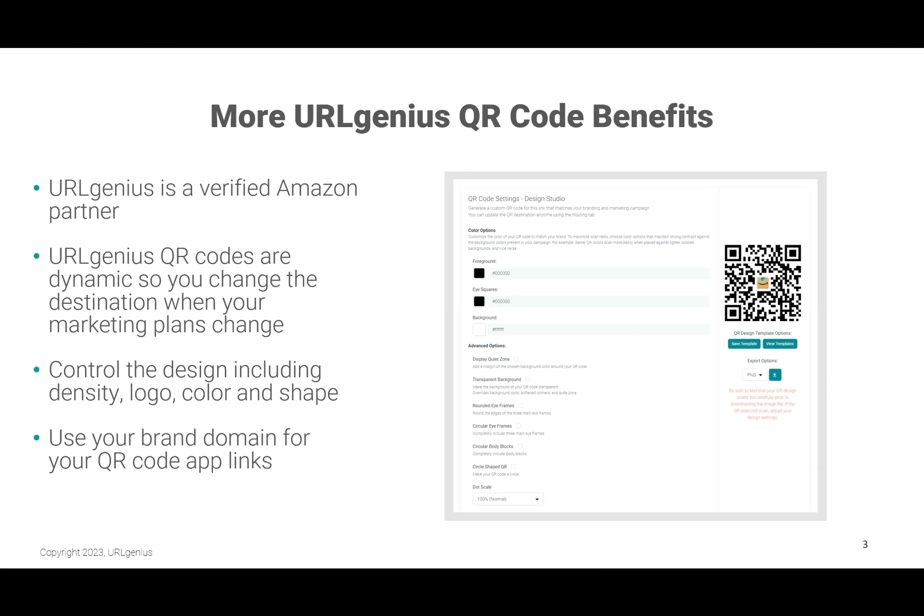URLGenius is a verified Amazon partner. It's a patented, enterprise-grade platform with maximum uptime. Also, your QR codes are dynamic, so should your marketing plans change, you can change the destination of the QR code to go to a different product or a different store.